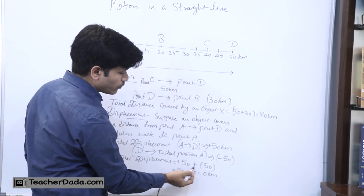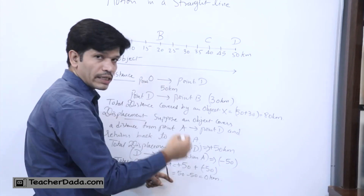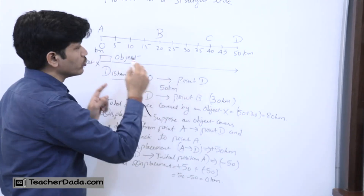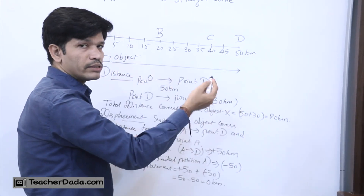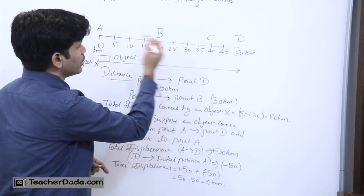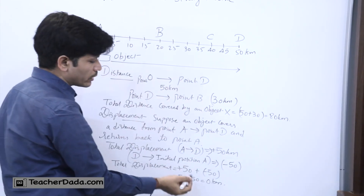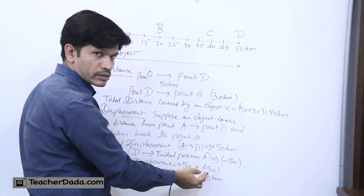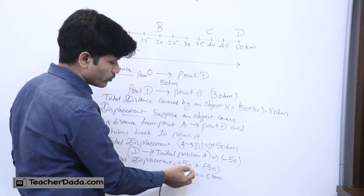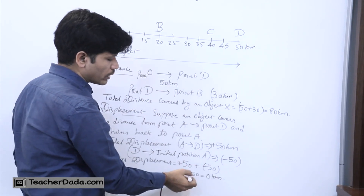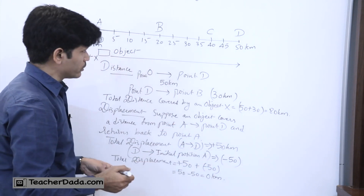That is why we get plus 50 plus minus 50 as per the sign convention, because on the right hand side we take plus as on the number line, and on the left hand side, coming towards the west, we take all numbers as minus. So minus 50. If we add both, we get 50 minus 50 equal to 0 kilometres.